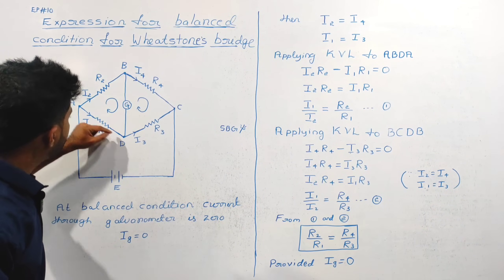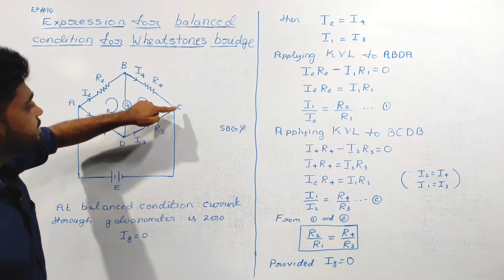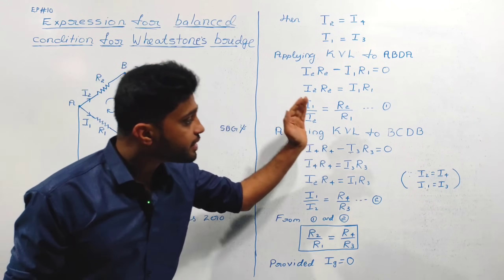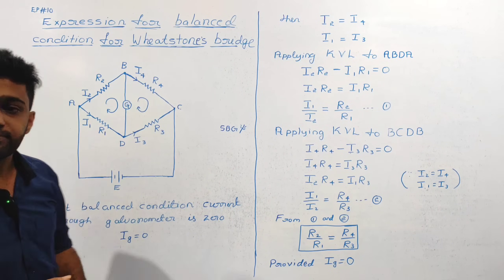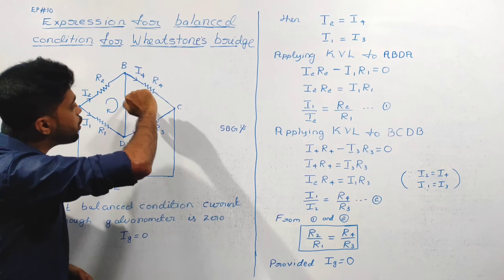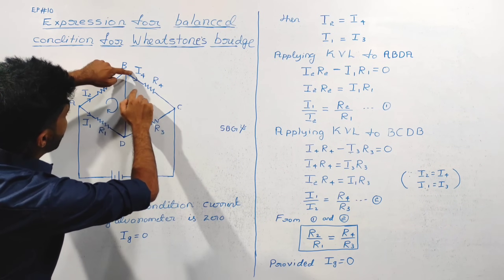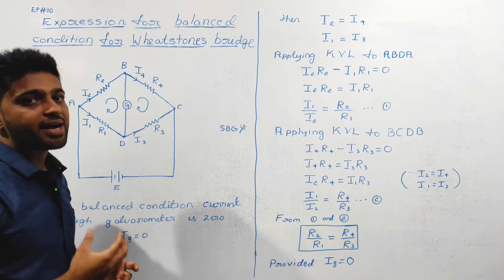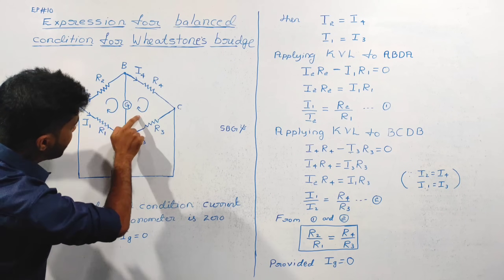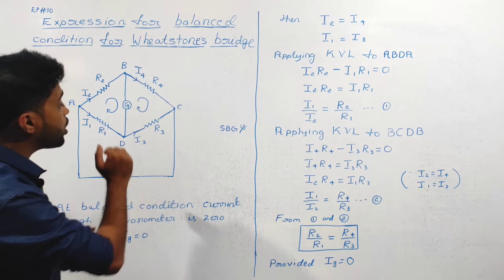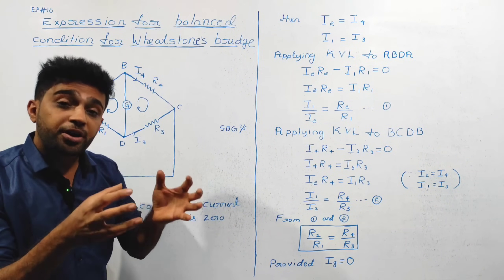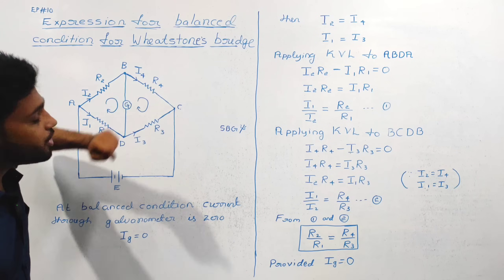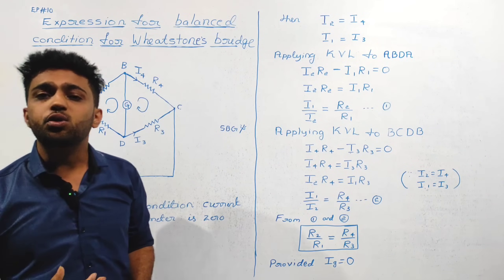Now we consider loop BCDB and apply Kirchhoff's voltage law. Going in the clockwise direction, the product I4 R4 is in the same direction — positive. But I3 R3 is in the opposite direction — negative. So: I4 R4 minus I3 R3 equals zero.